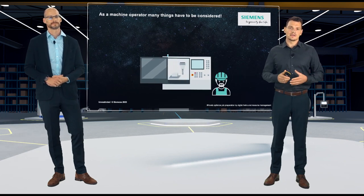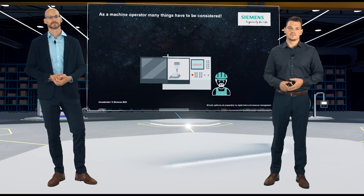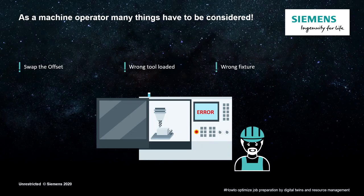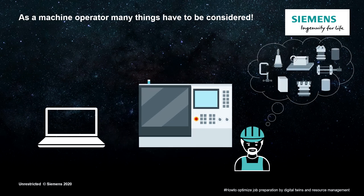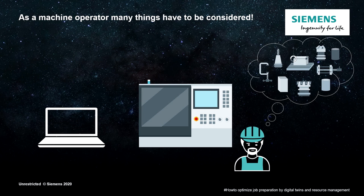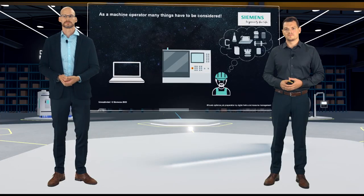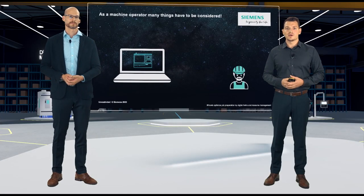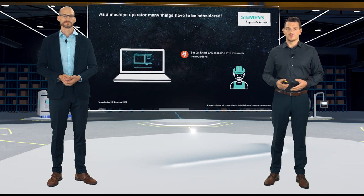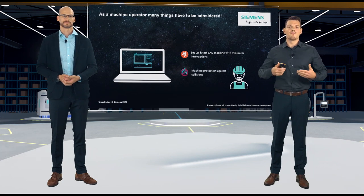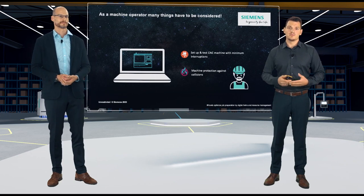However, if the machine operator forgets something, unpleasant scenarios can occur. Wrong offset, wrong tool, the clamping situation doesn't correspond to the planned machine and many other things. Isn't there a tool to get these things out of your head and into a system where all this can be tested in advance? So that you can concentrate on the essentials and let the machine produce. This would lead to fewer interruptions in production and crashes only happen in the virtual world, where no part of the machine can be destroyed.